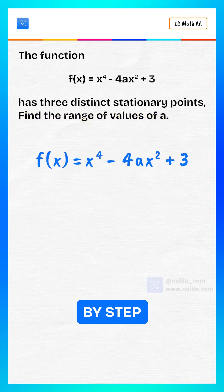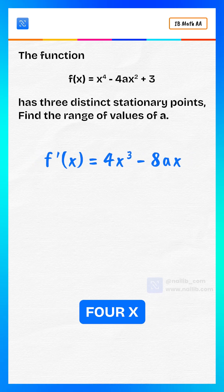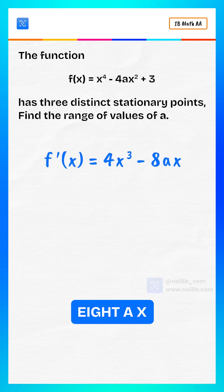Let's solve step by step. To find stationary points, we differentiate. So f prime of x equals 4x cubed minus 8ax.